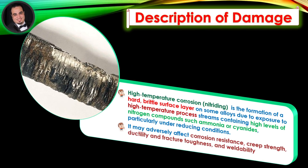Description of damage. High temperature corrosion — nitriding — is the formation of a hard, brittle surface layer on some alloys, due to exposure to high-temperature process streams containing high levels of nitrogen compounds, such as ammonia or cyanides, particularly under reducing conditions.